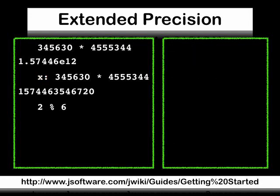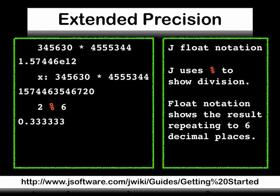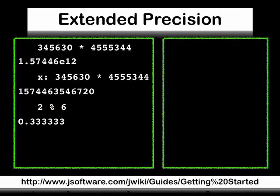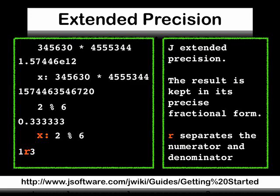J uses percent for division. Float notation shows the result repeating to six decimal places. For extended precision, the result is kept in its precise fractional form. R separates the numerator and denominator.